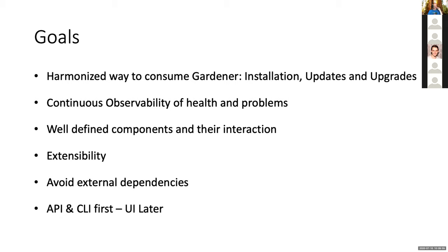We also want extensibility, because SAP has internal components that need to be installed with Gardener, and other stakeholders have their own components in their landscapes. We want to be extensible so everyone can add their own components, being as open as possible. We also want to avoid external dependencies — keep the installation as small as possible and reuse what Gardener already needs. And we want API and CLI first; UI is a very low priority.